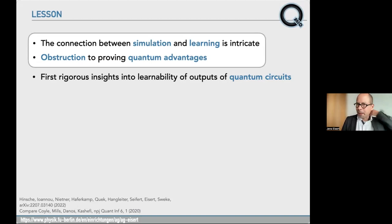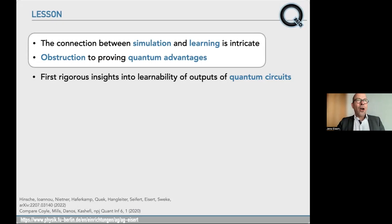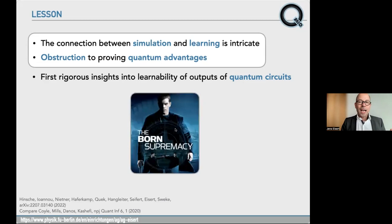We made quite some progress in understanding the learnability of outputs of quantum circuits, with all its ups and downs. We found the connection between simulation and learning is intricate — way more intricate than was thought in the literature. We found heavy obstructions to proving quantum advantage: sometimes quantum computers can't do better than classical machines in learning output distributions. In fact, quantum computers can't even learn their own output distributions, which is a bit funny. There's a very beautiful earlier paper — asking very beautiful questions on the learnability of distributions and intricate connections between quantum advantage, supremacy, and learning simulation of born machines, with the somewhat bombastic but funny title 'The Born Supremacy.'